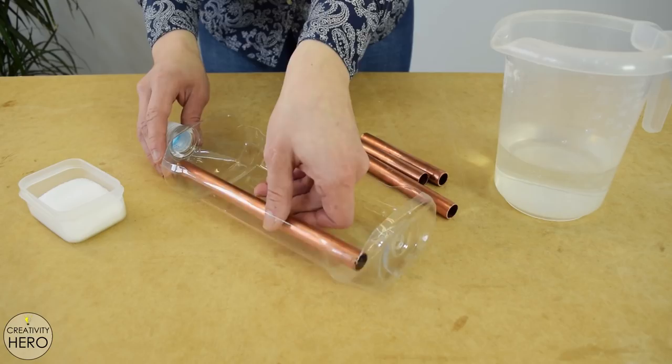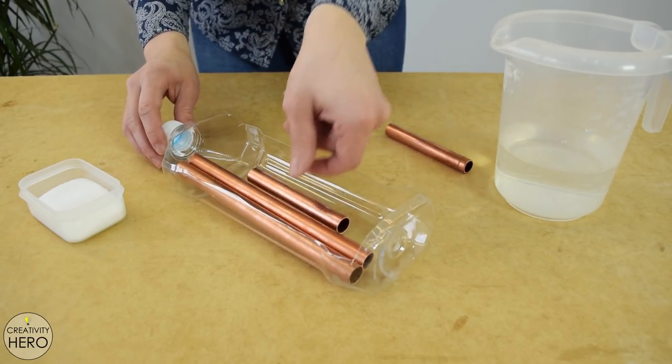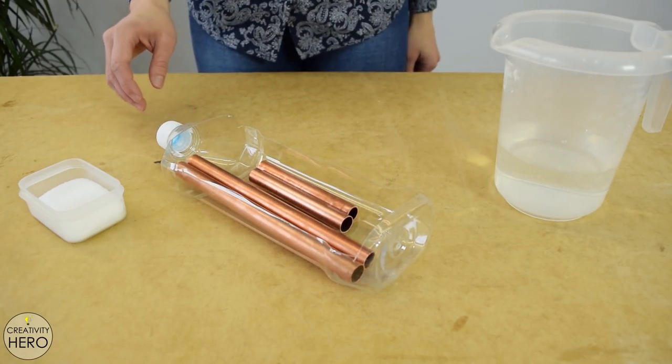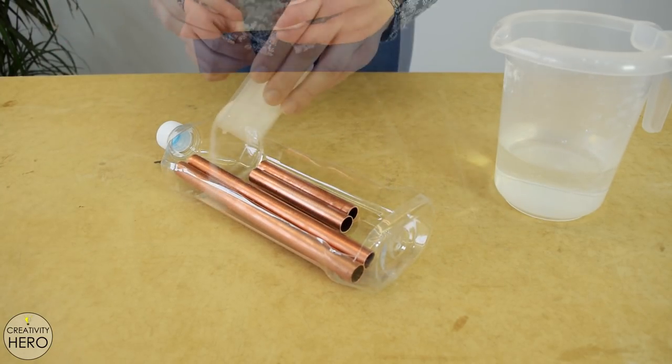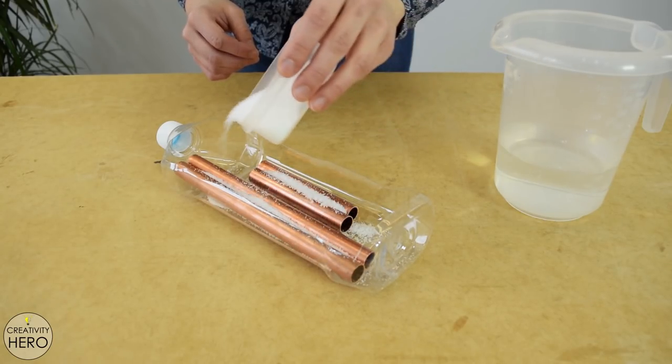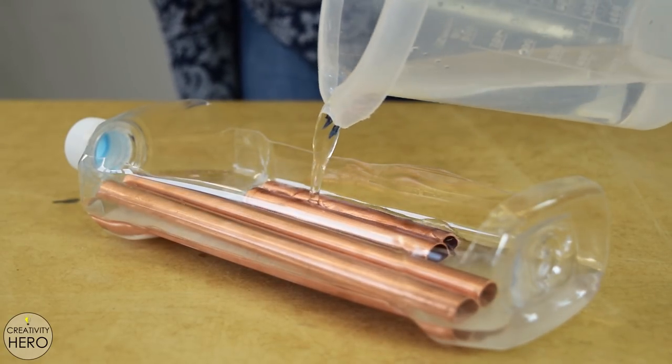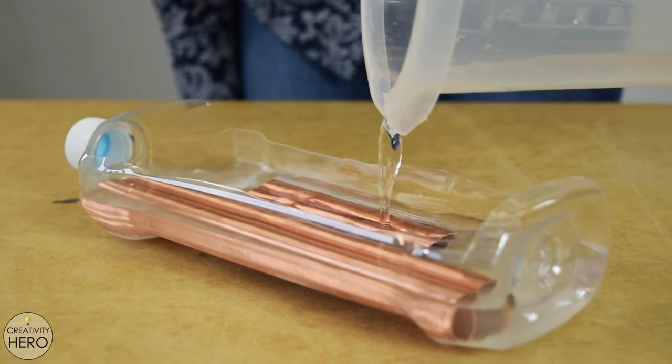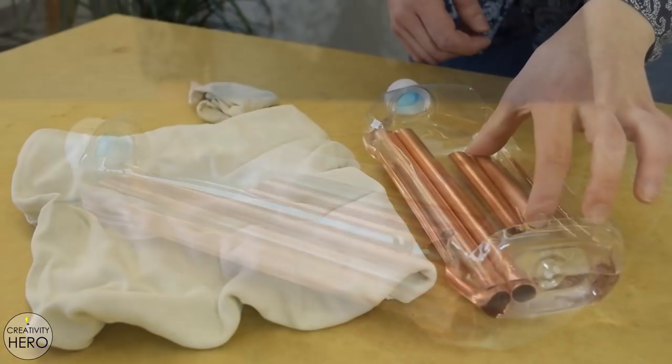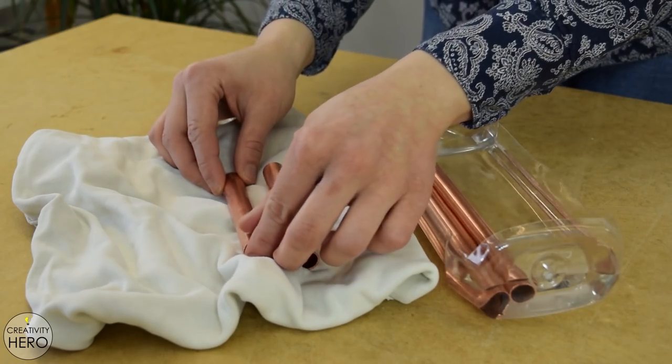While the paint is drying I can prepare the copper pipes that I previously cut. To clean them I used salt and vinegar. I placed the pipes into a plastic container and added a little salt and more vinegar until the pipes were completely covered. After a few minutes I removed the pipes and wiped them off using a clean cotton cloth.